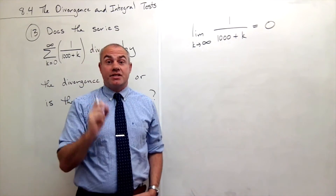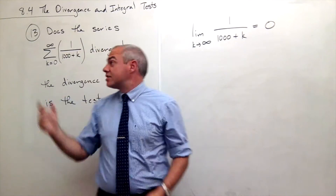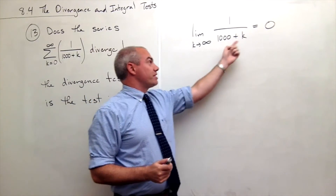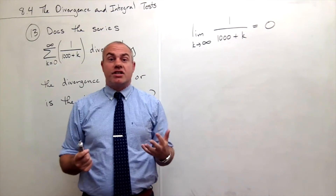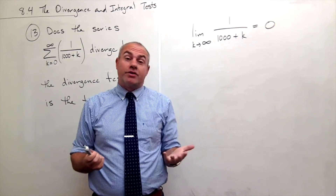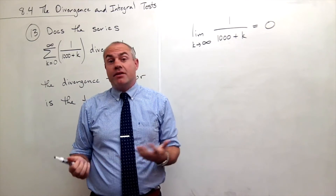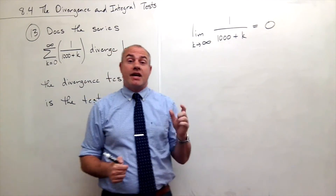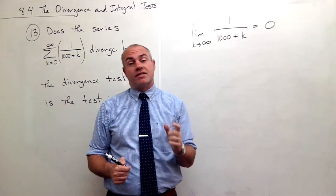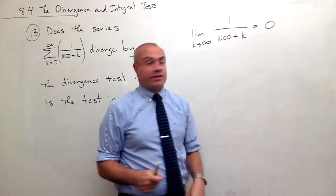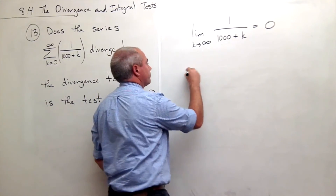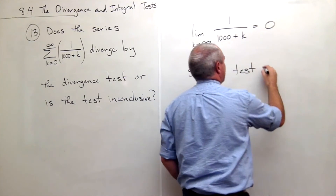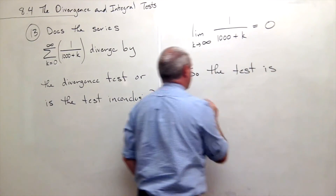Now this does not tell me that my series converges. Just because the limit of the sequence is 0, it just tells me it could converge — maybe, maybe not, we don't know. So this is a case where our divergence test is inconclusive. The test is inconclusive.